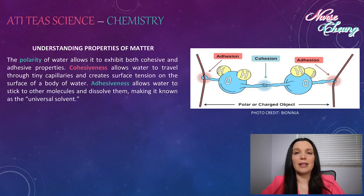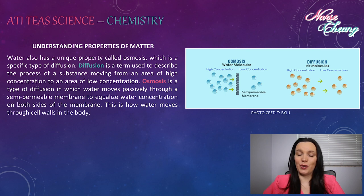The polarity of water allows it to exhibit both cohesive and adhesive properties. Cohesiveness allows the water to travel through tiny capillaries and creates surface tension on the surface of a body of water. Adhesiveness allows water to stick to other molecules and dissolve them, making it known as the universal solvent. Water also has a unique property called osmosis, which is a specific type of diffusion. Diffusion is a term used to describe the process of a substance moving from an area of high concentration to an area of low concentration. Osmosis is a type of diffusion in which water moves passively through a semi-permeable membrane to equalize water concentrations on both sides of the membrane. This is how water moves throughout cell walls in the body.